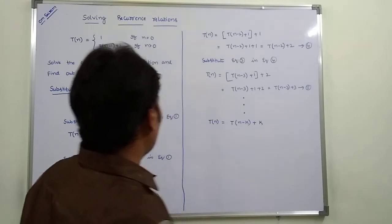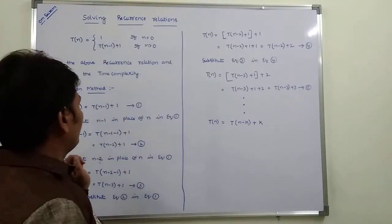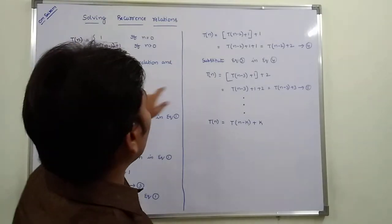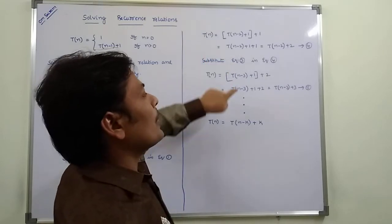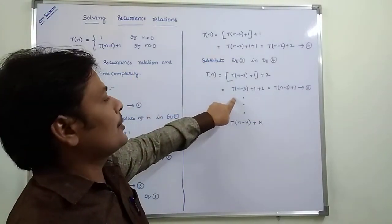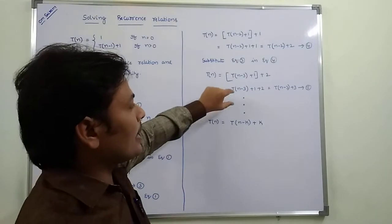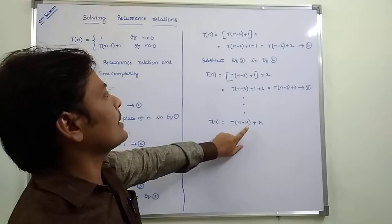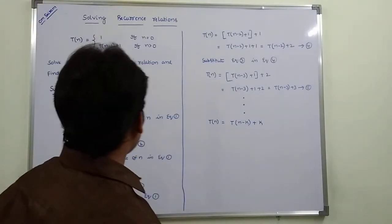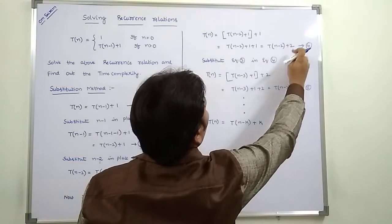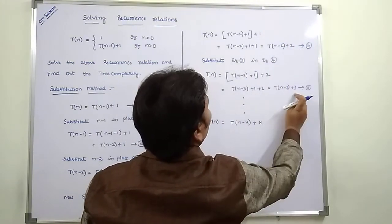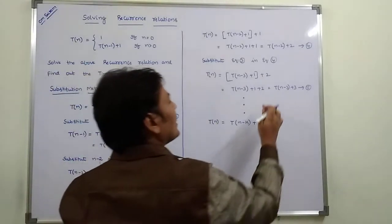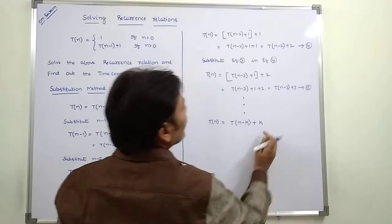We observe the pattern: first we get T(n-1), then T(n-2), then T(n-3). This procedure is repeated up to k times, so finally we get T(n-k). Similarly, the constants increase: +1, +2, +3, and finally +k.